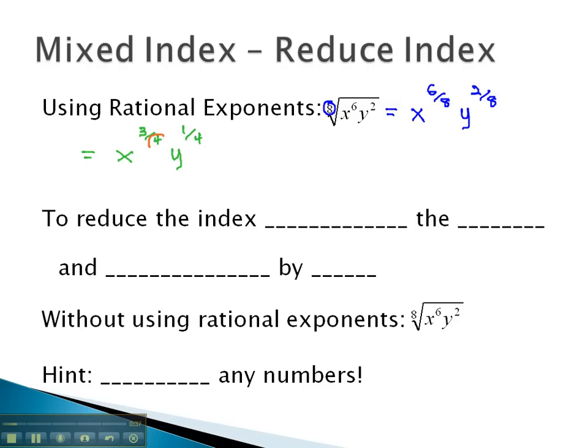Notice, each of those denominators are the same. The denominator can be thought of as the index on a radical expression. We now have x cubed and y to the 1st power. We have now reduced the index, which started out as an 8, down to a 4.